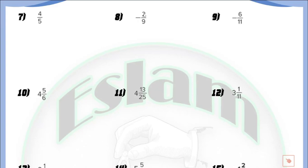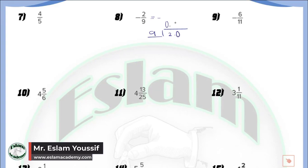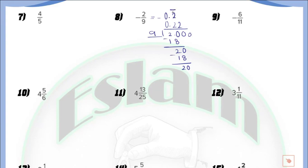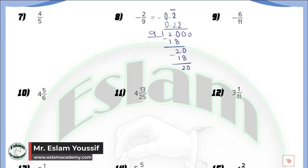In question number 4, we have negative 2 over 9. Once we have a negative number, the answer will be negative. We divide 2 by 9: 2 is smaller than 9, so we write 0 point. 20 divided by 9 equals 2, because 2 multiplied by 9 equals 18. By subtraction we get 2, and we find that 2 keeps repeating. So the answer equals negative 0.2 repeating, written as negative 0.2 with a bar above the 2. The bar means that digit repeats infinitely.